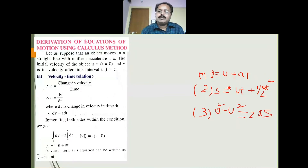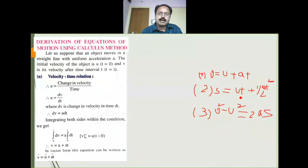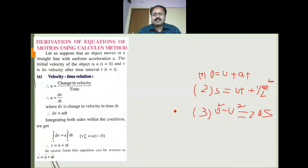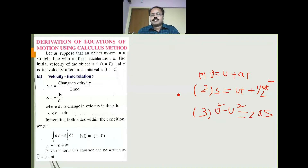These three equations we have to derive by using the calculus method. First: V is equal to U plus AT. Second: S is equal to UT plus half AT square. Third: V square minus U square is equal to 2AS. Using these equations, if the initial velocity is given, we can determine the final velocity. If both initial and final velocities are given, we can determine the acceleration or displacement.